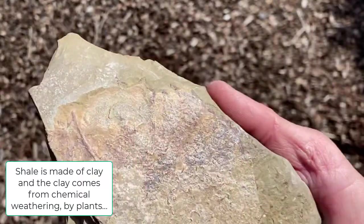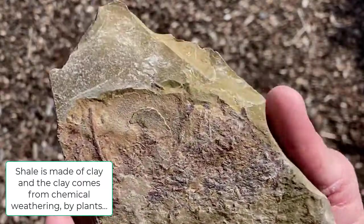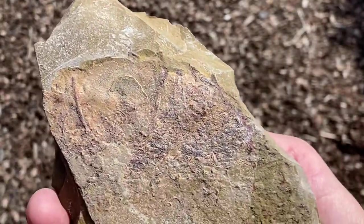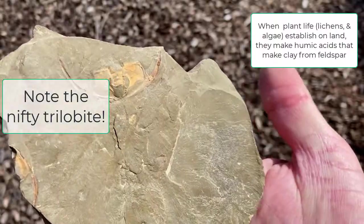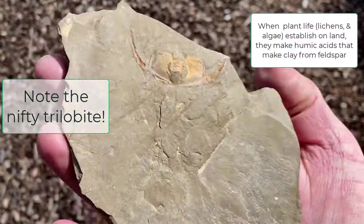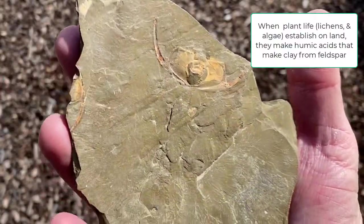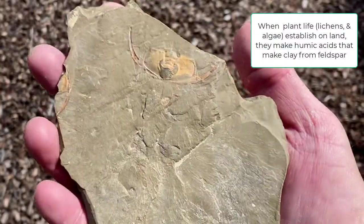The first surface vegetation evolves about 800 to 700 million years ago, and it produces organic matter in terrestrial soils that was critical for the production of clay by chemical weathering. Before that time, there was little clay on the land or in the ocean, and therefore no shale.